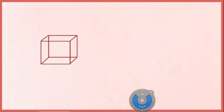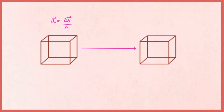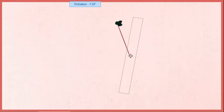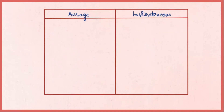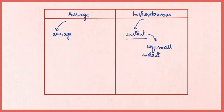To memorize angular acceleration, always remember the analogy with linear acceleration: linear acceleration is the rate of change of linear velocity, while angular acceleration is the rate of change of angular velocity. Remember the formula: delta omega in radians per second divided by delta t in seconds gives angular acceleration in radians per second squared. For the difference between average and instantaneous, remember that instantaneous means the change in angular velocity over a very small interval of time.